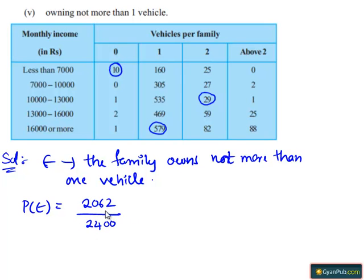2 is common factor for both numerator and denominator. So, 2 goes in 2062 1031 times and 2 goes in 2400 1200 times. Therefore,